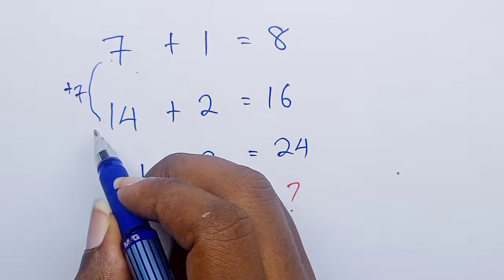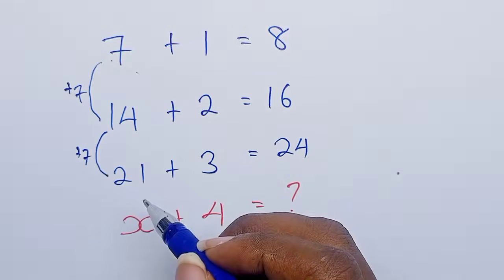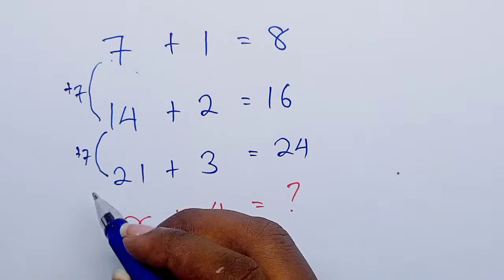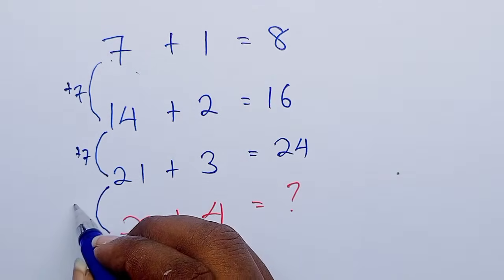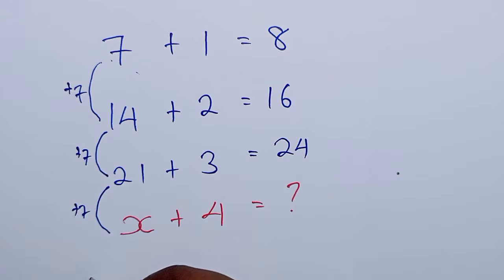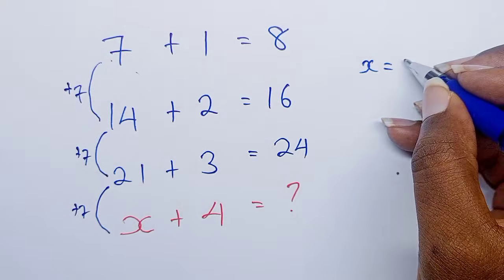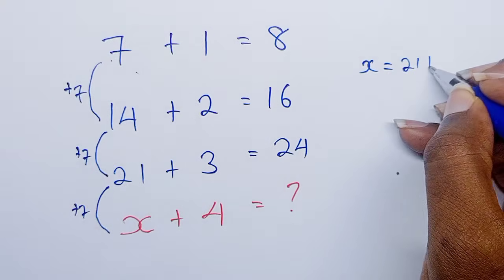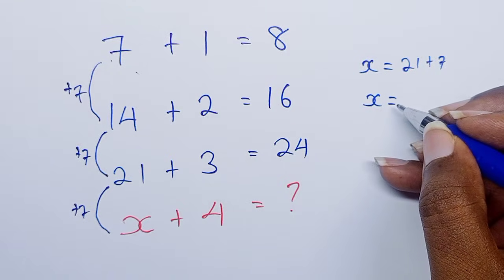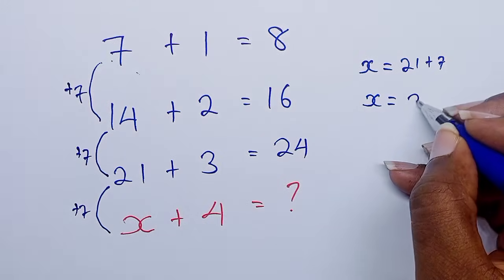From 14 to get 21, you add 7. That means from 21 to X, you add 7. Therefore, X equals 21 plus 7, which gives us 28.